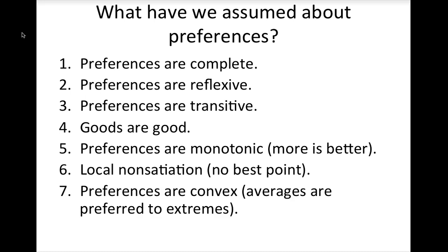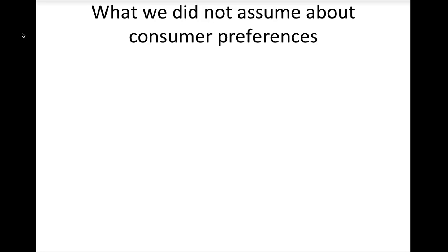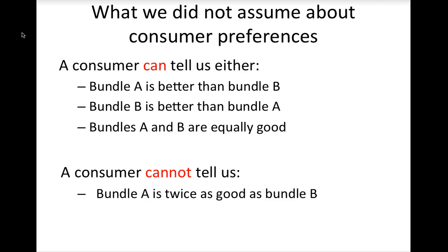Finally, we have assumed that preferences are convex, which means that averages are preferred to extremes. Based on these assumptions, a consumer can tell us either bundle A is better than bundle B, bundle B is better than bundle A, or bundles A and B are equally good.